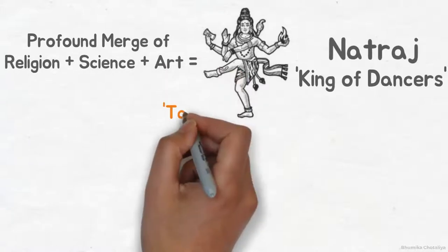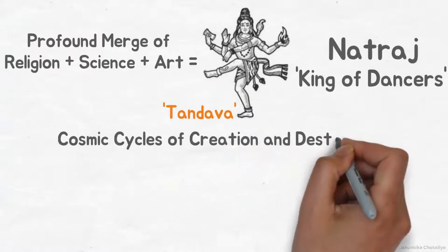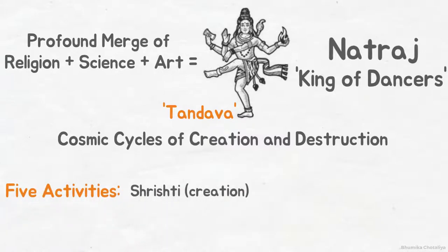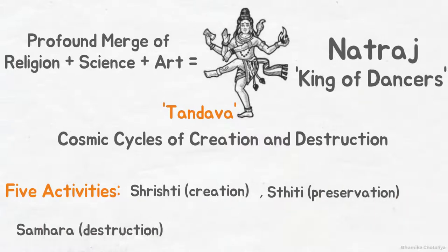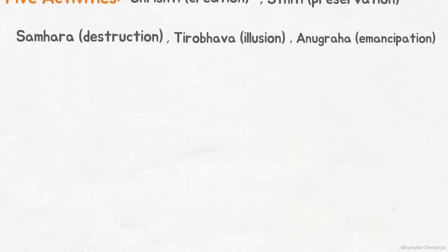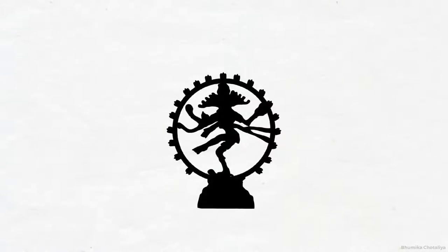This cosmic dance of Shiva is called Tanda. It symbolizes the cosmic cycle of creation and destruction as well as the daily rhythm of birth and death. The dance of Shiva also represents his five activities: Shristi, Sthiti, Samhar, Tirubau and Anugrah — an extraordinary iconographic representation of the rich and diverse cultural heritage of India.